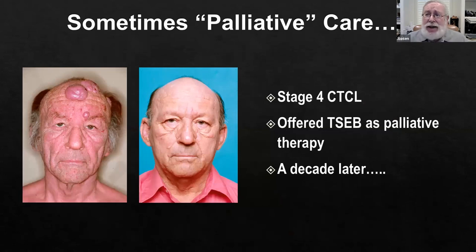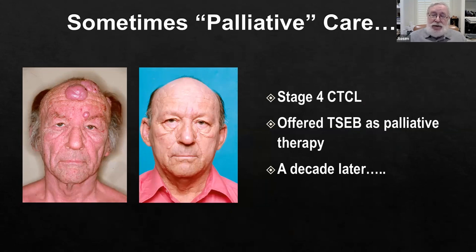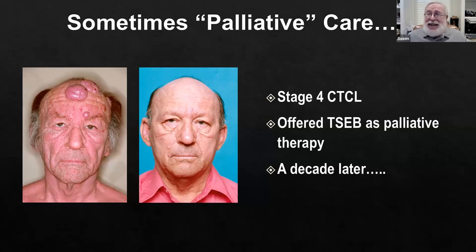And every once in a while, you get this: a patient with stage four CTCL, all red with tumors everywhere on his scalp. He was offered total skin electron beam as palliative therapy. That's what he looked like a decade later — a decade later, there's no evidence of disease. Every once in a while, palliative care ends up being curative. You never know when that kind of miracle is going to happen. He died in an auto accident, but the 12 years he had from his total skin electron beam to the time he died were great. He was so happy that he did the palliative care. That's something you could have arranged.